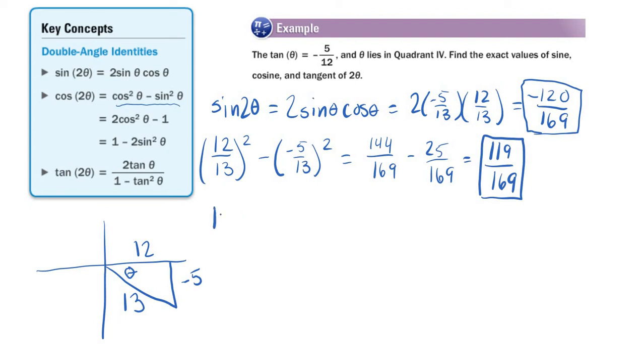Let me show you that. So isn't tangent 2 theta the same as sine 2 theta divided by cosine 2 theta? Oh, that's just a quotient identity, right? So if I plug things in, sine is negative 120 over 169. Cosine is 119 over 169.